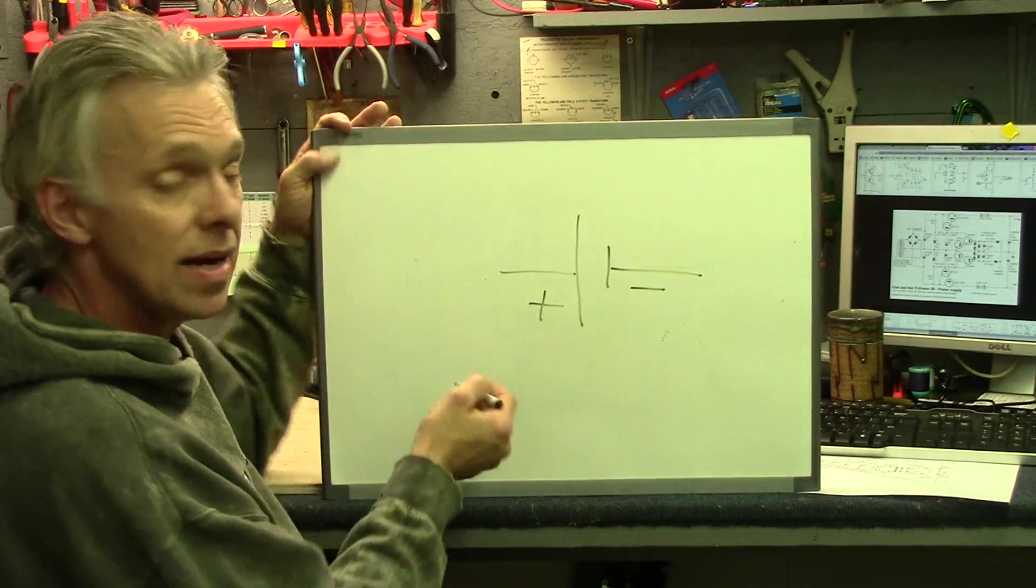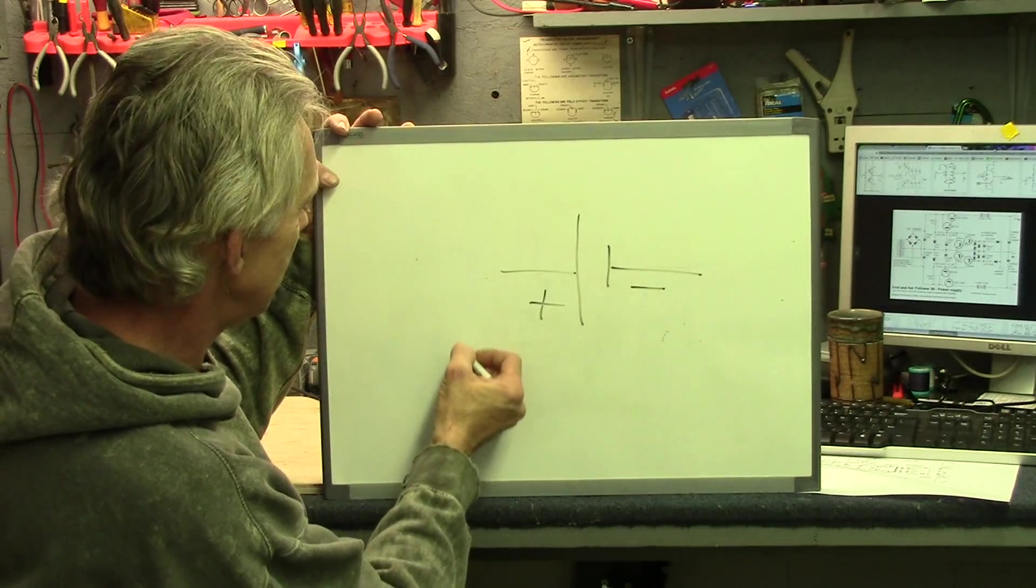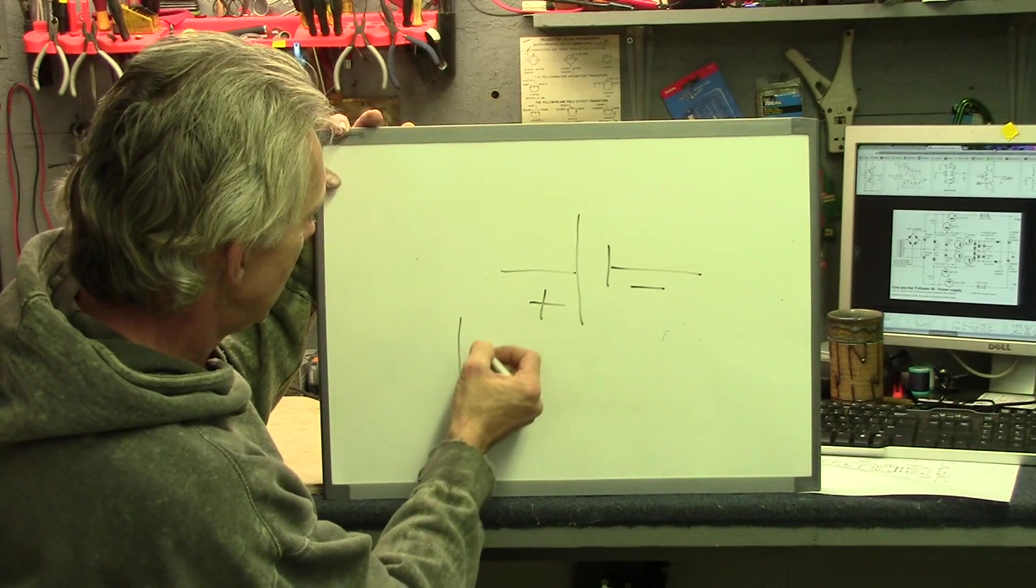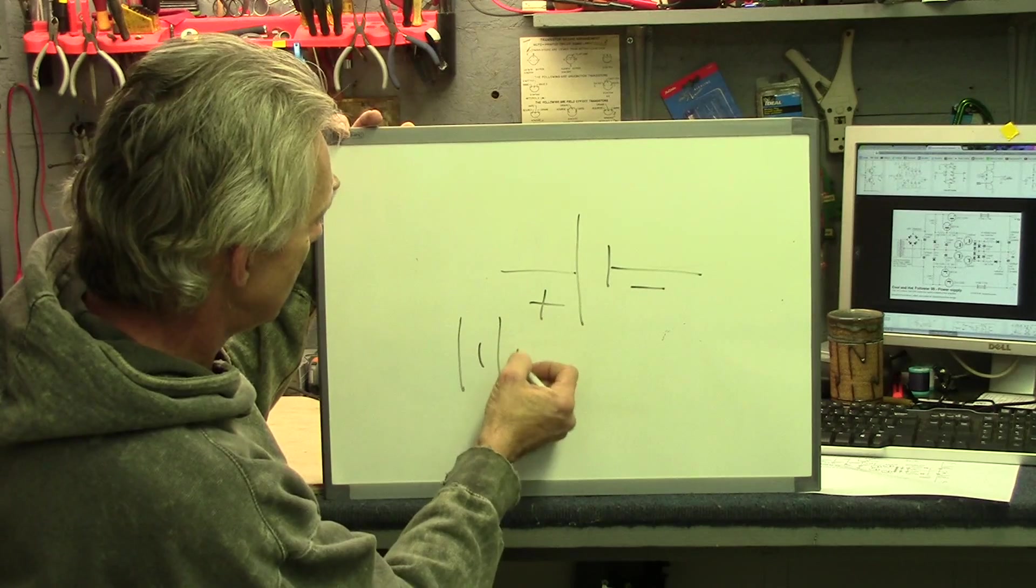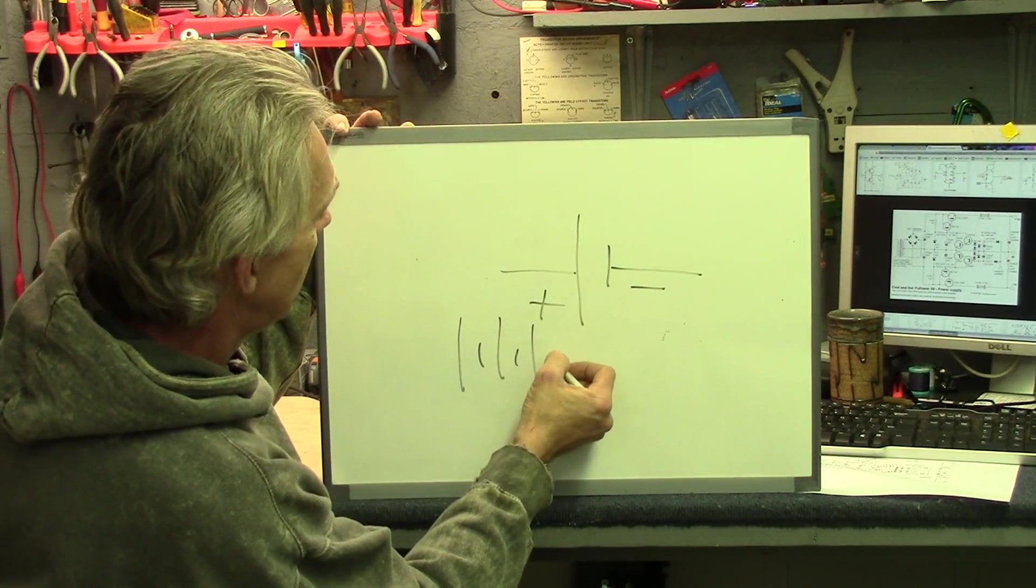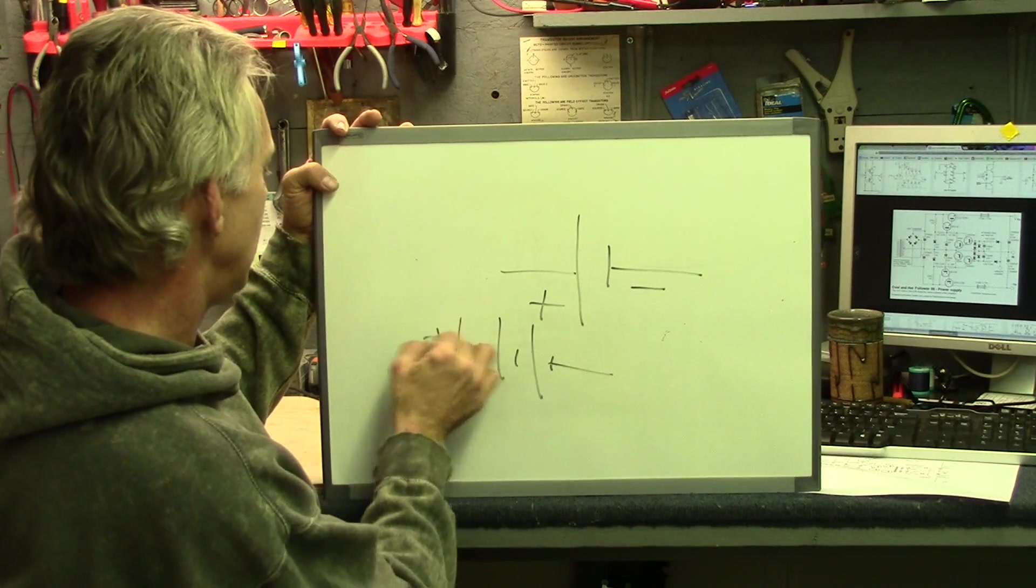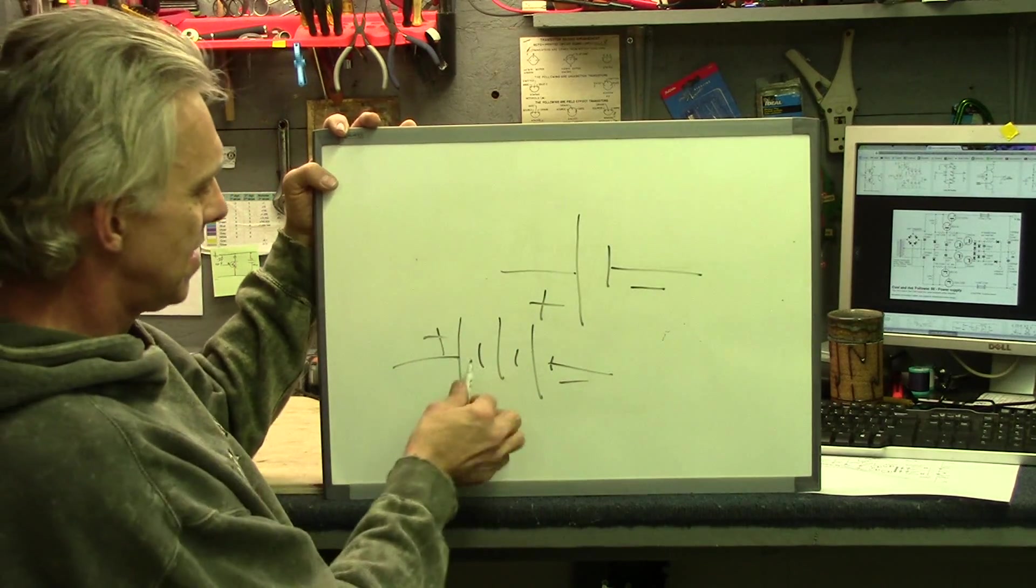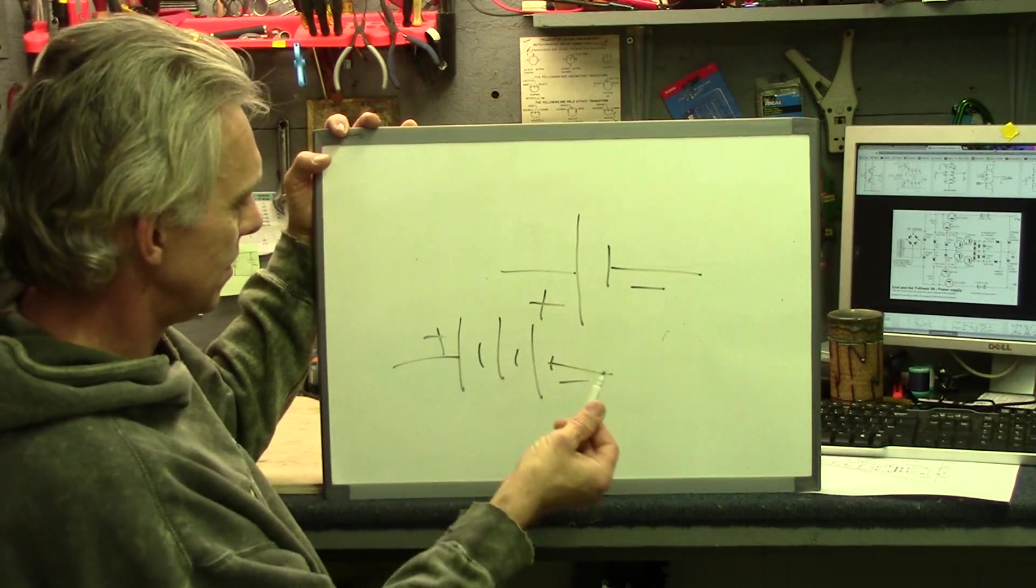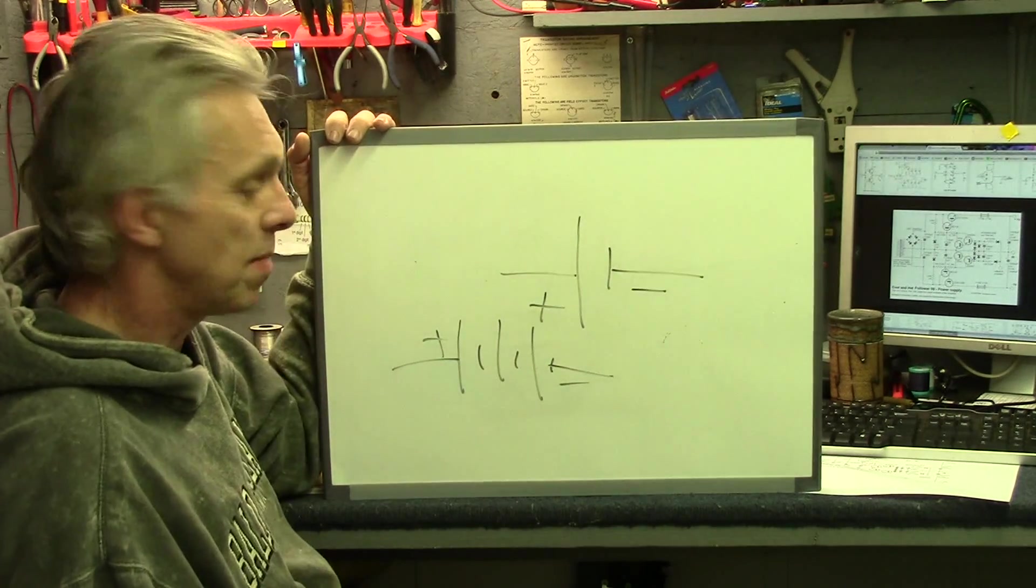You may see them drawn with multiple cells, and they'll look like this: small, big, small, big, and small, and positive, negative. This has one, two, three cells. So that's a battery.